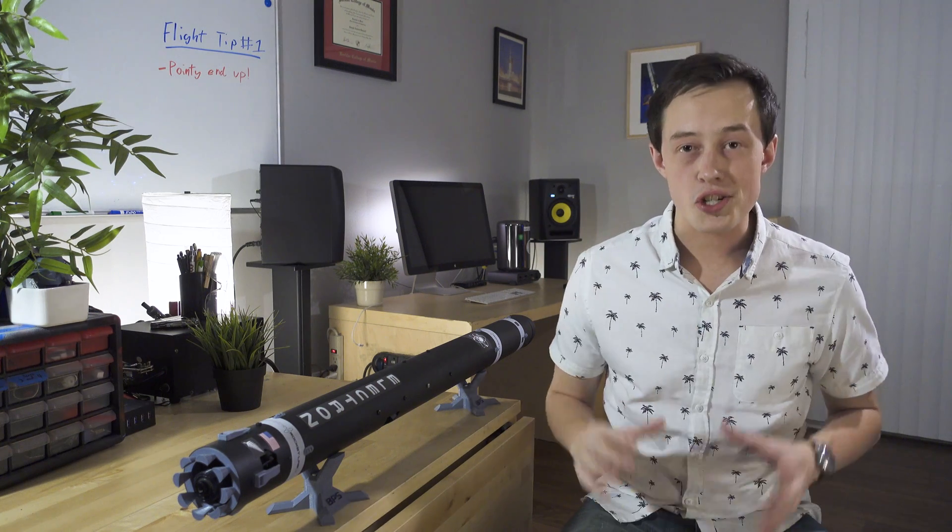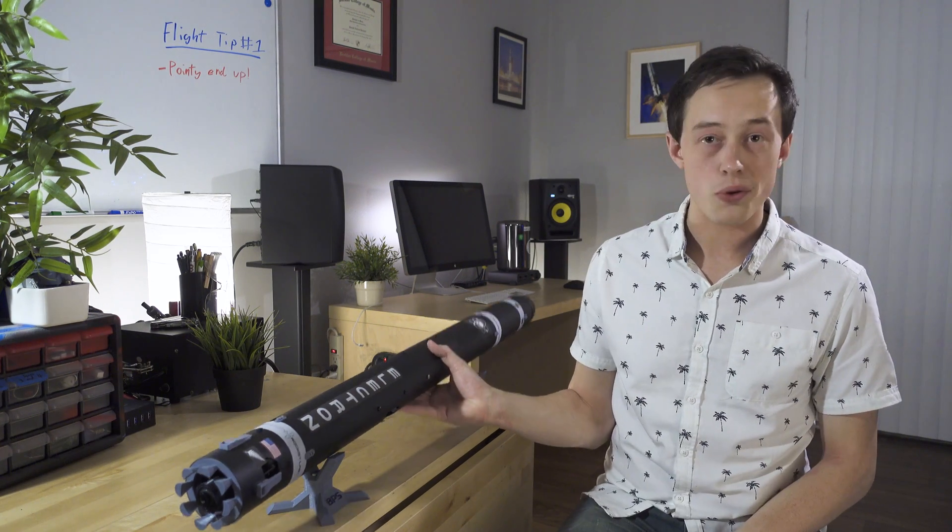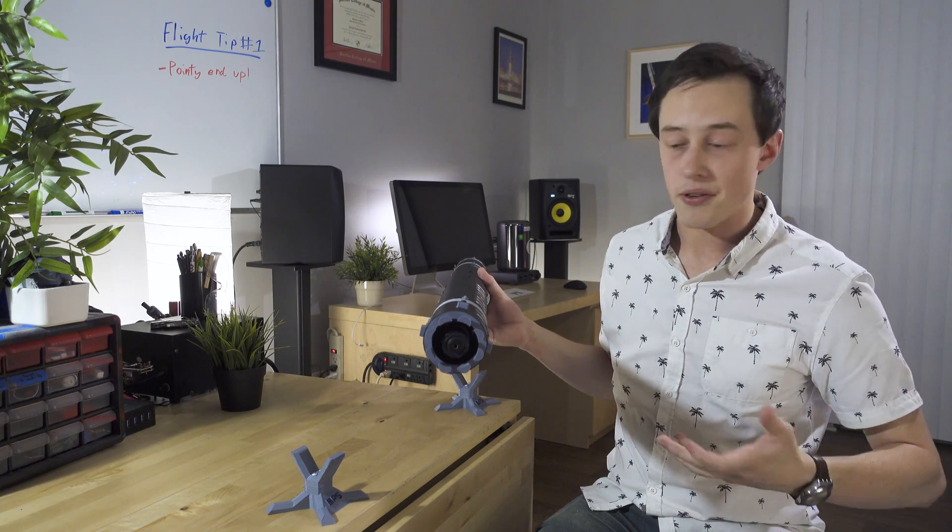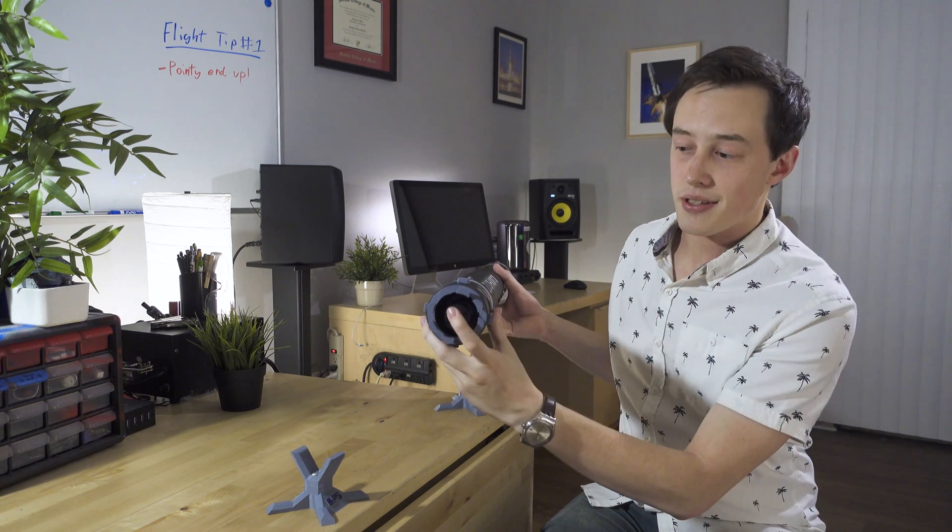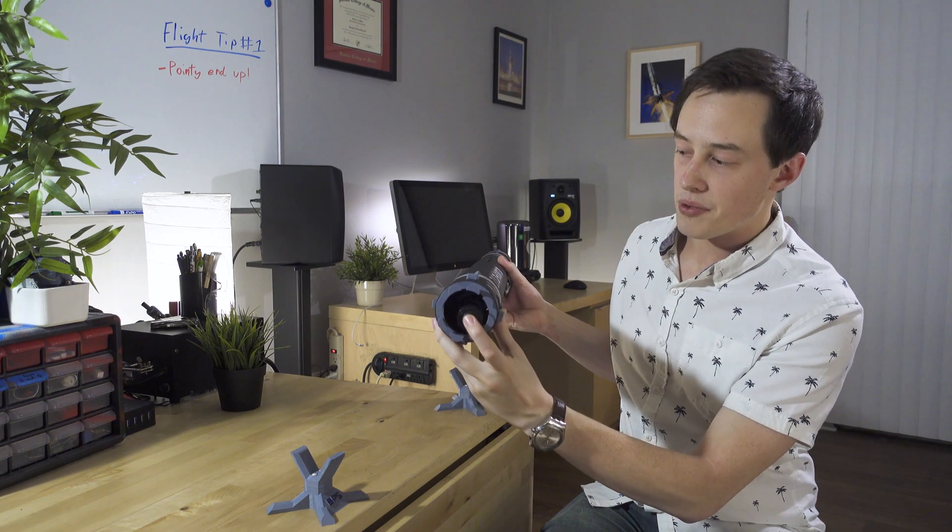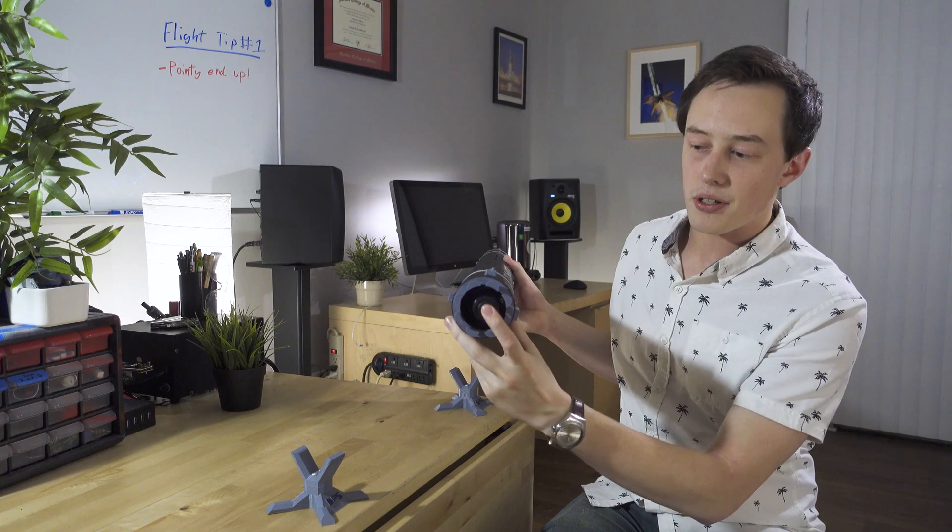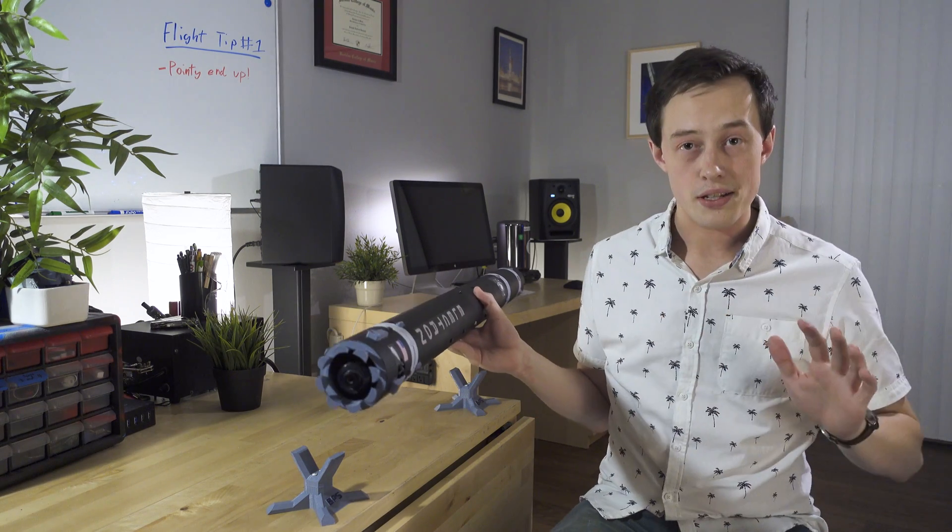Tip number five is to check the thrust vector control system before every flight. I'll demonstrate this now, and what you want to do is move the thrust vector control mount back and forth on each axis. So I'm going to move it back and forth on this one, and then this one, and both of these look good. This has plenty of room to move. So this is a good test.